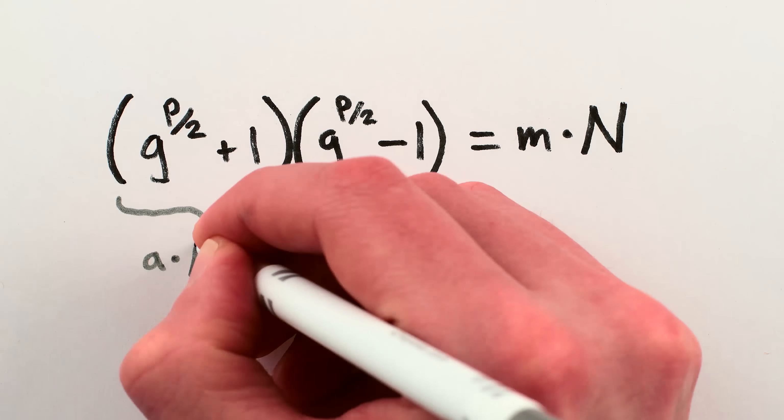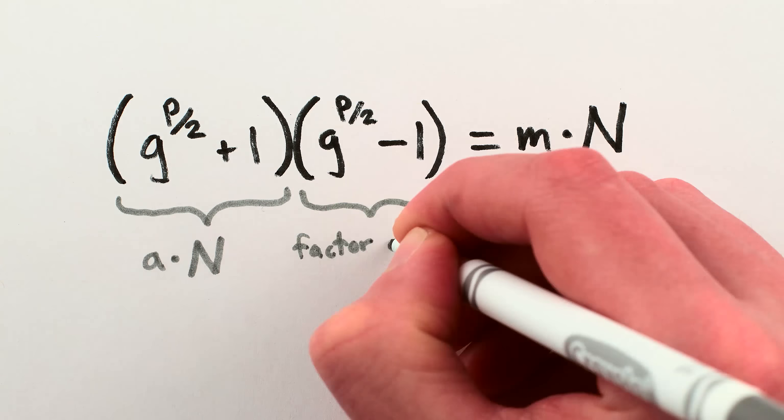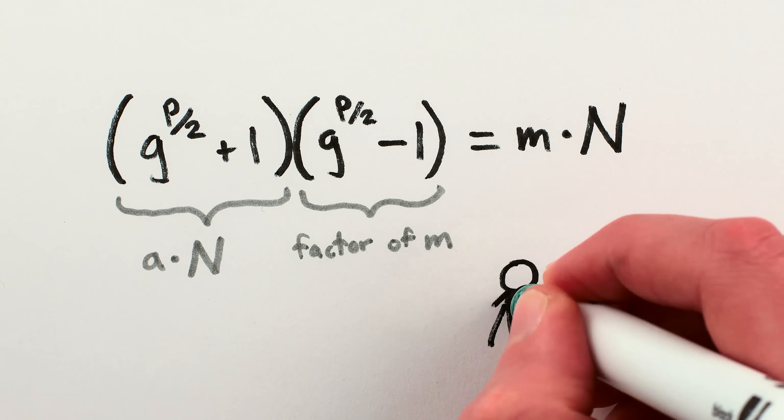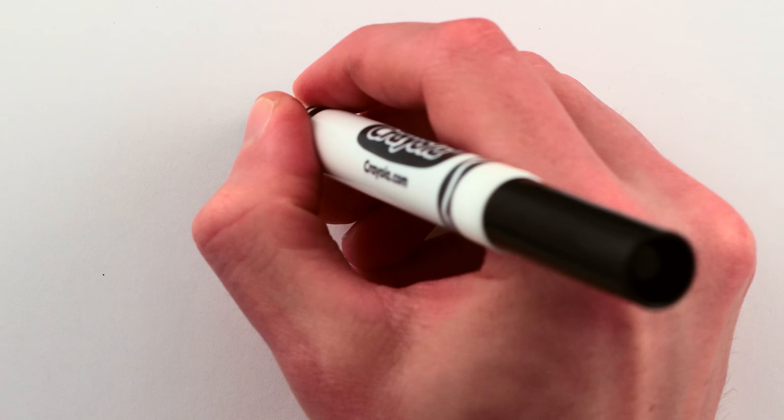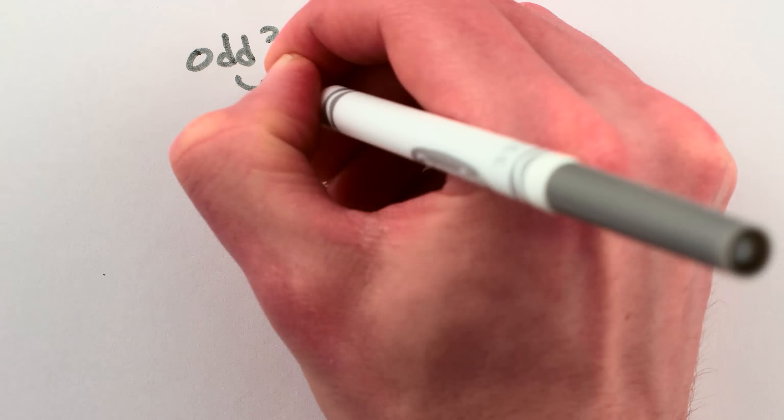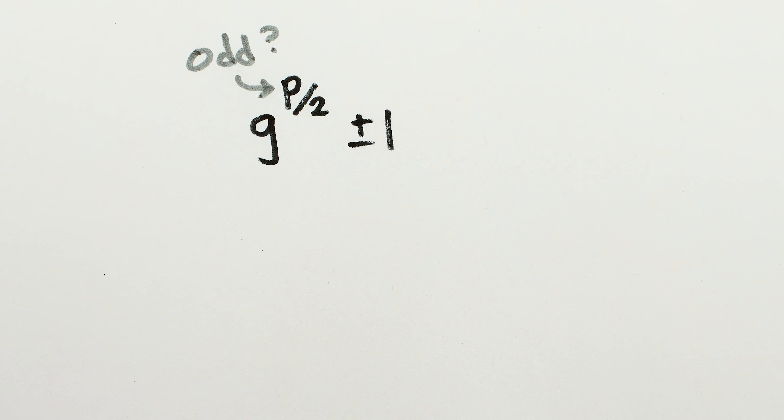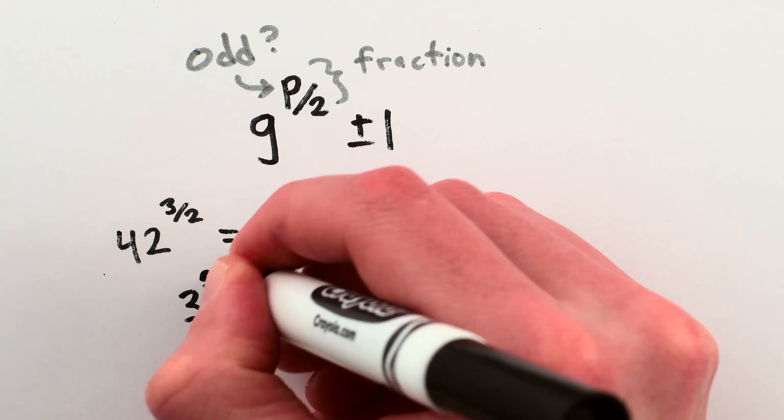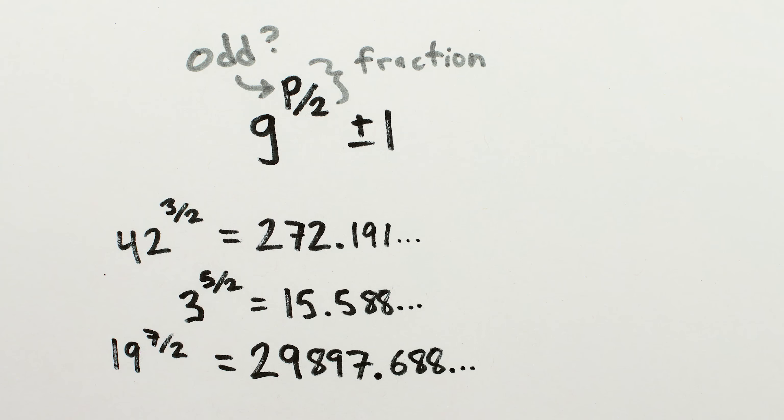First, one of the new guesses might itself be a multiple of n, in which case the other would be a factor of m, and neither would be useful to us in any way. And second, the power p might be an odd number, in which case p over 2 isn't a whole number, and so our guess taken to the power of p over 2 probably isn't a whole number either, which is no good. We're working with integers here.